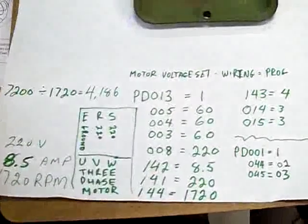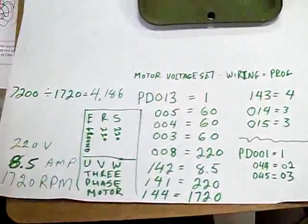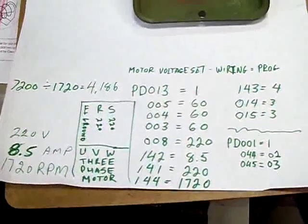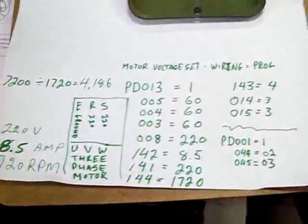These are basically the programming parameters that I've used, and I'm in Canada. 60Hz is the norm. USA is the same thing.